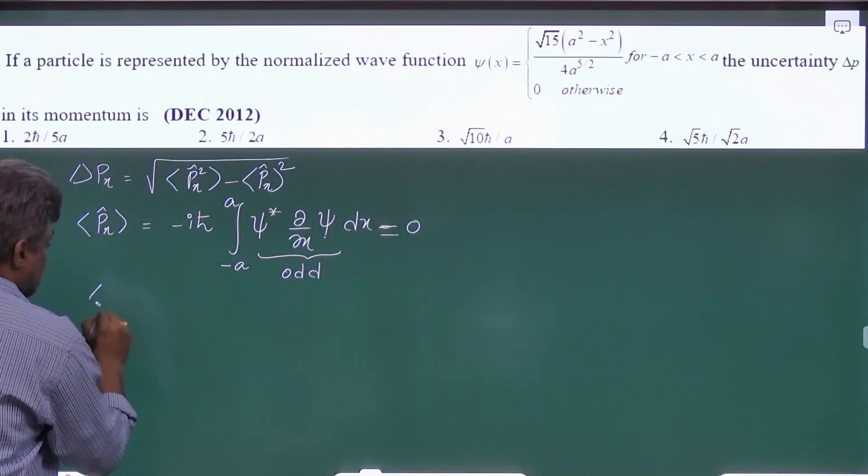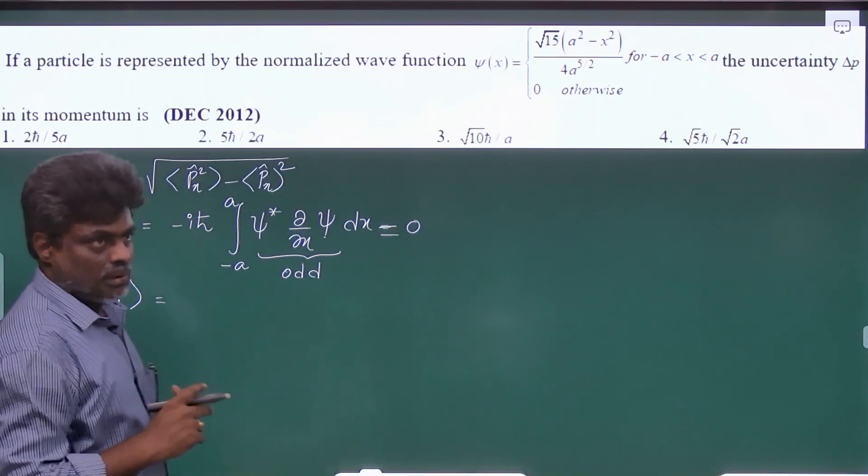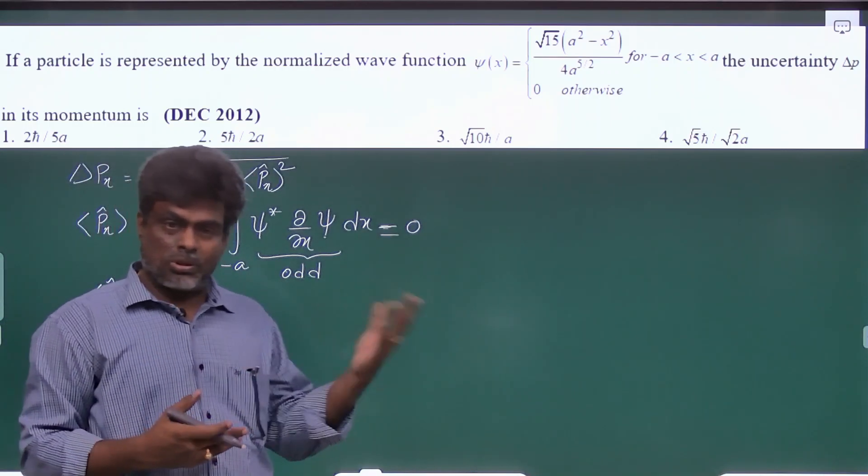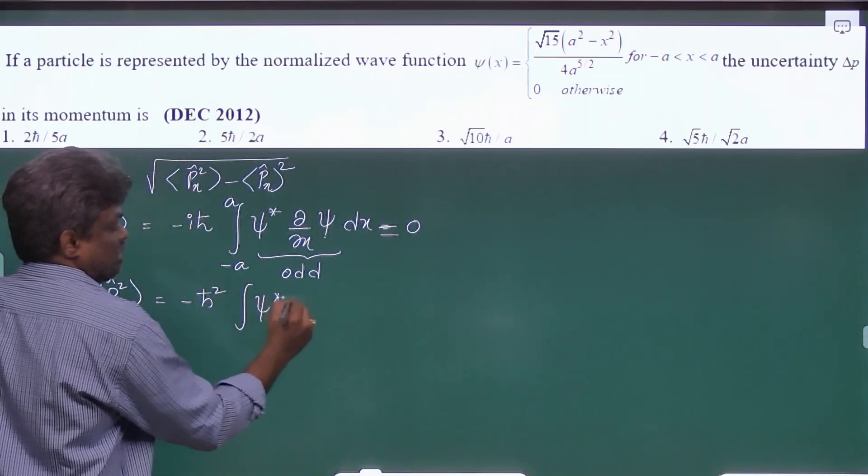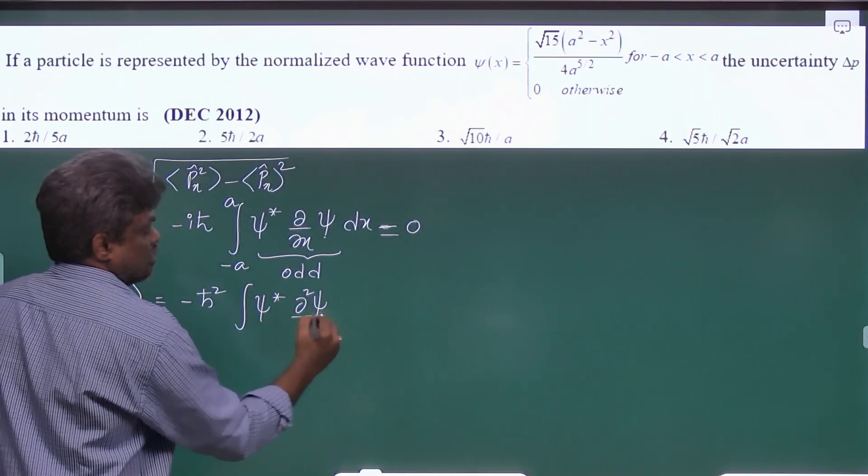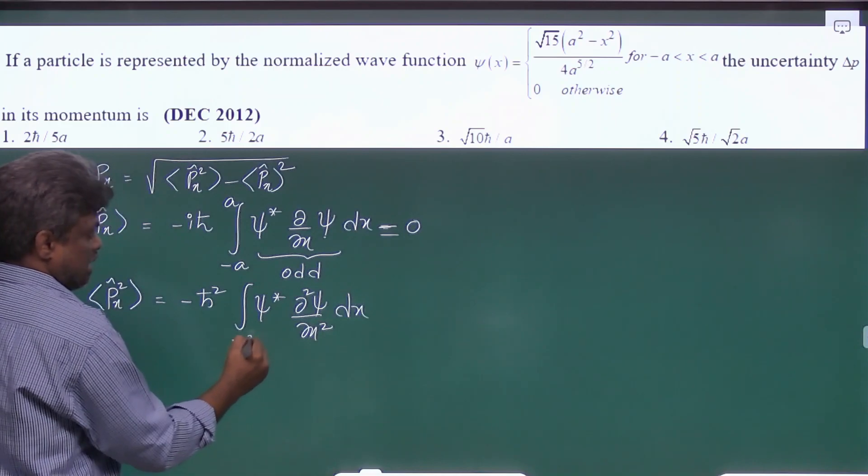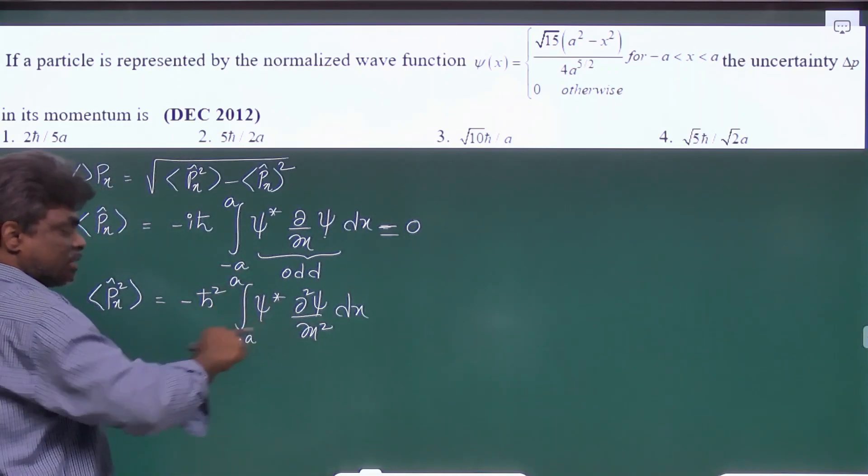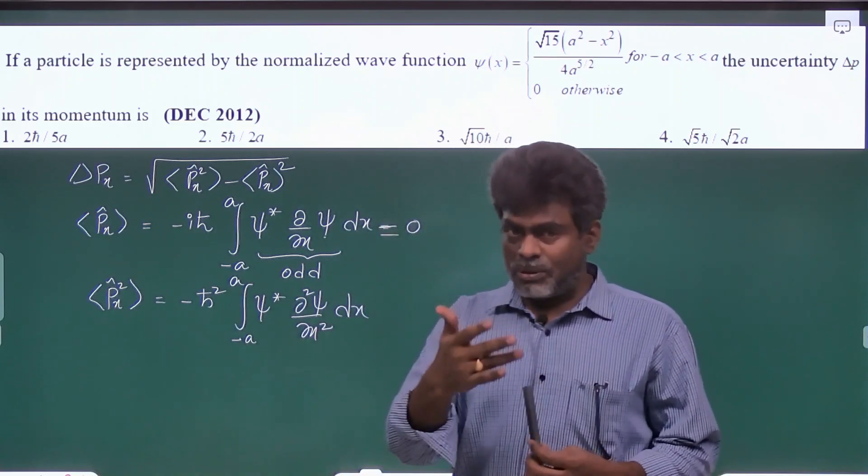And if you want to find px square average value, generally if you substitute the formula it will be minus h cross square psi star and d square psi by dx square dx. But my advice, don't go with this formula. If you proceed with this formula it will be too lengthy.